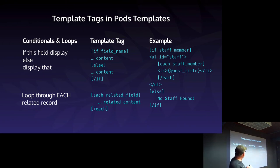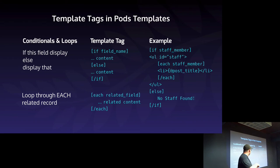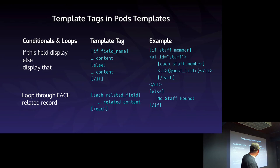We also have template tags in pods templates for conditional and loop logic. For an if/else: `[if field_name]content[else]other content[/if]`. If I want to loop through all related records — say I'm on a service like haircut and want to show everyone who does it — I use `[each related_field]` then output `{@post_title}` and `{@phone_number}` for that person, then `[/each]`. I start an unordered list, loop through, output a linked list item with the permalink and post_title, end the each, end the list, add else 'no staff found', end the if.